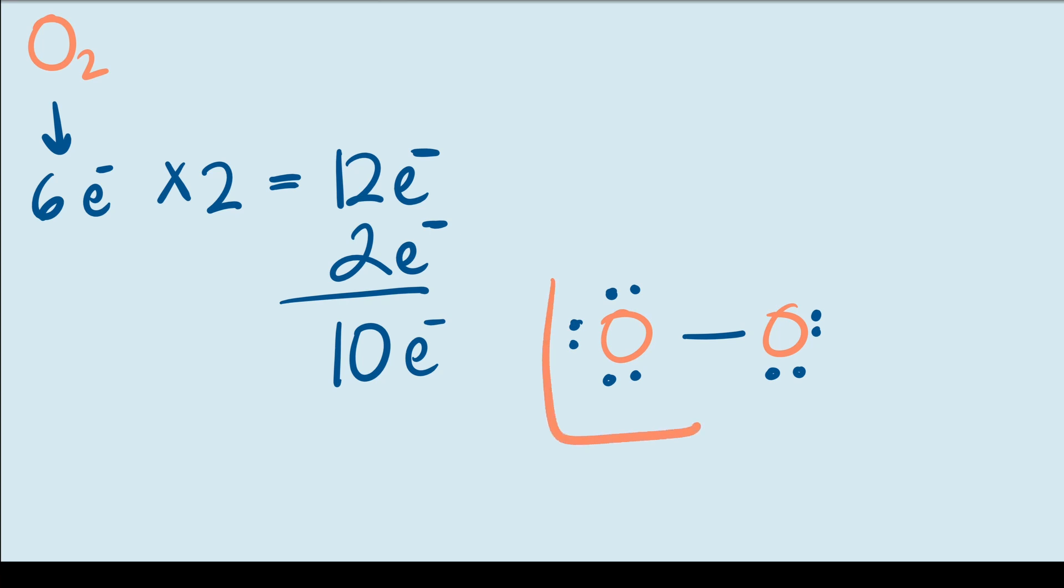So now we fill the octet for this oxygen atom because it has 8 electrons, but we still haven't satisfied the octet for the right oxygen atom. So we can fix that very easily by taking a pair of electrons from this oxygen atom and moving it here to create another bond.